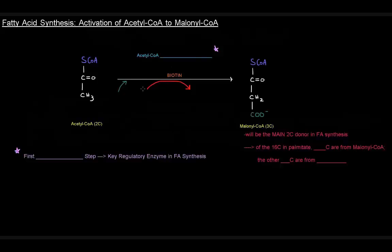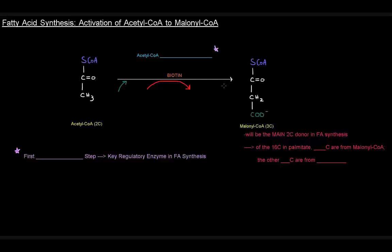In this video, I want to talk about the activation of acetyl-CoA to malonyl-CoA. If you recall from beta-oxidation, we had to activate a fatty acid to acetyl-CoA, which is the activated form of fatty acid that could actually undergo the reactions of beta-oxidation. Similar idea here. With fatty acid synthesis, we have to activate these acetyl-CoAs to their active form, which is malonyl-CoA.